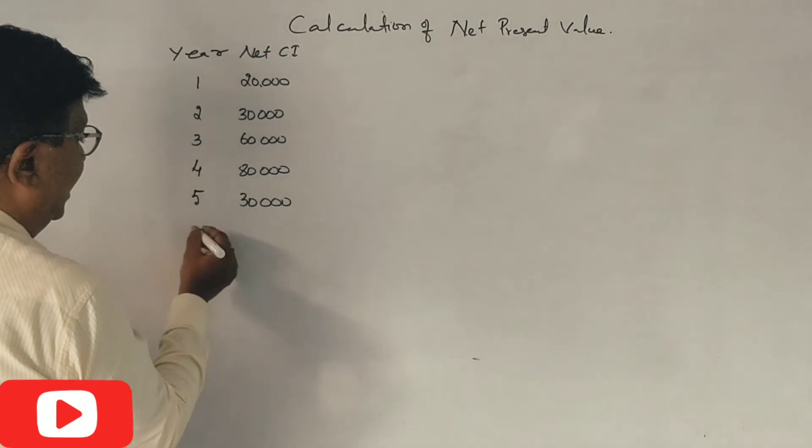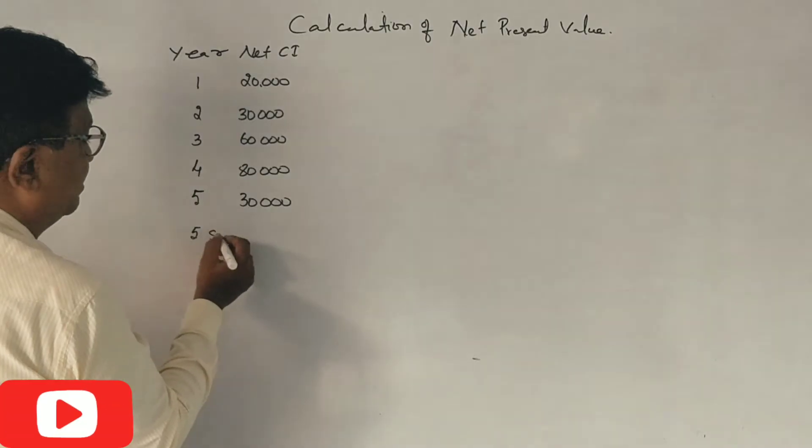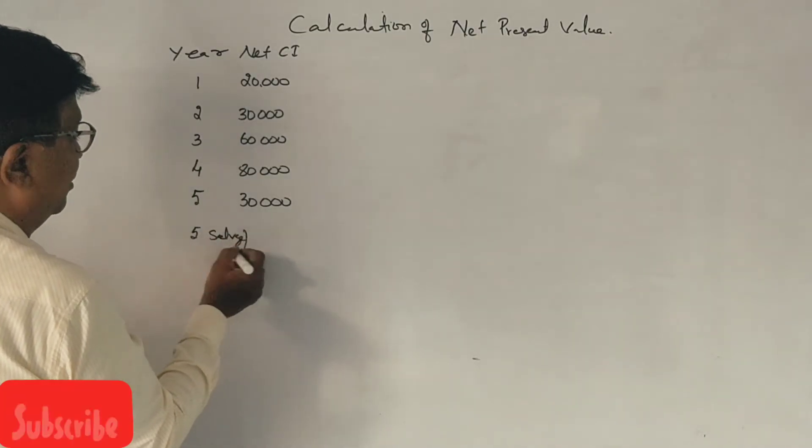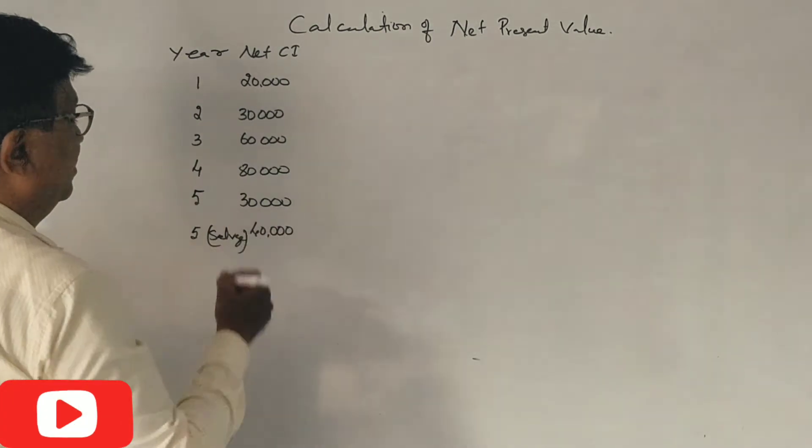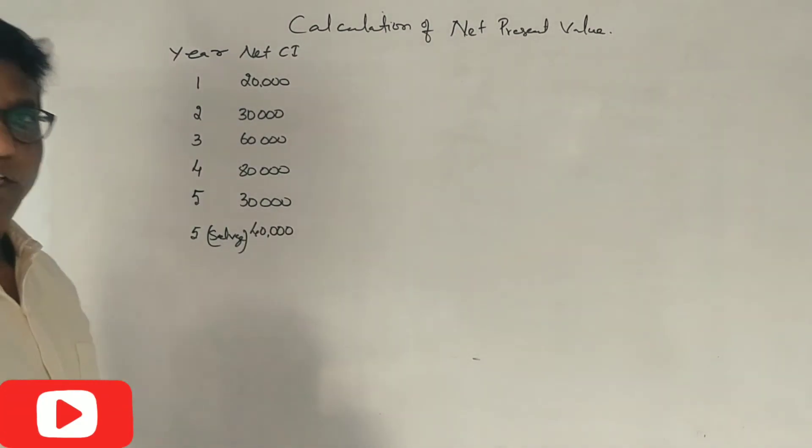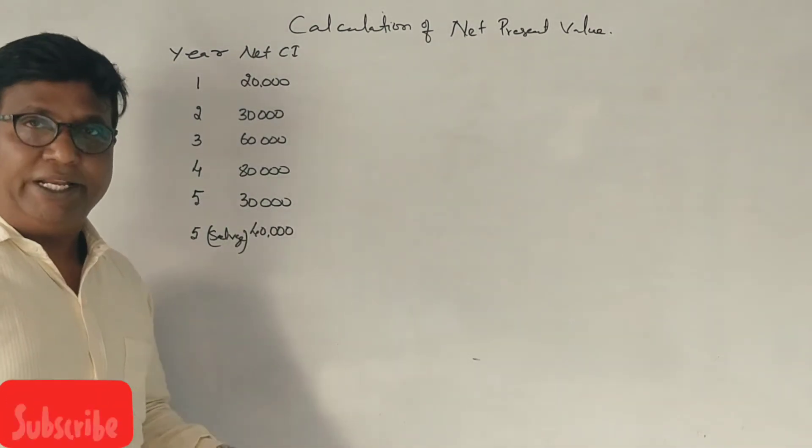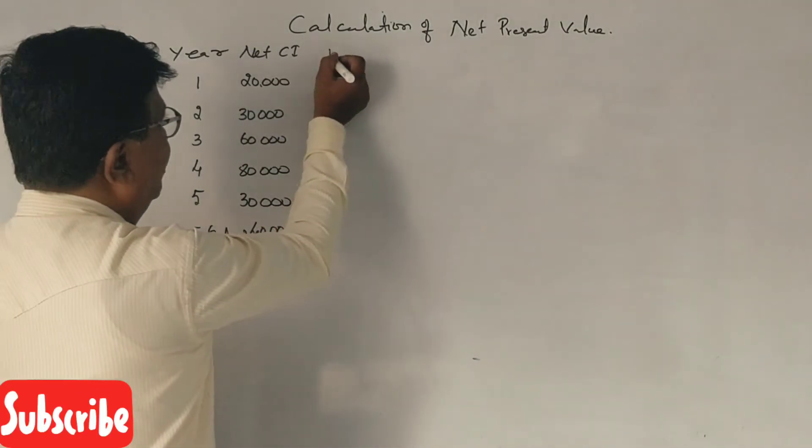In the end of the fifth year, when the salvage is 40,000, it becomes 30,000 plus 40,000. The discount factor at 10 percent.